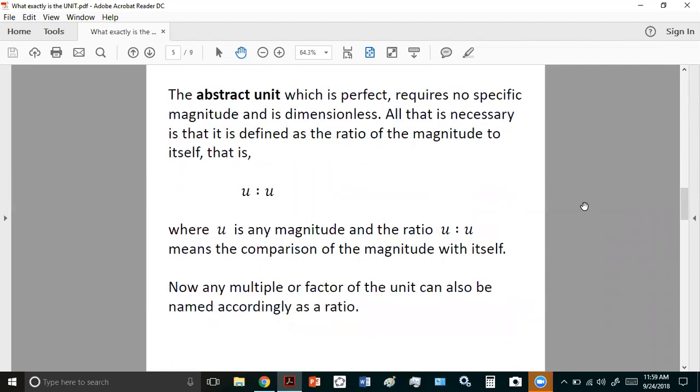Now, the abstract unit, which by the way is perfect, requires no specific magnitude, and it is dimensionless. It doesn't have to be a centimeter, or a mile, or a light year, or anything else. All that is necessary is that it is defined as the ratio of the magnitude to itself. That is, if U is a particular magnitude,